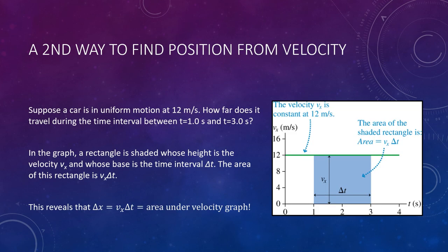Earlier we saw that we could deduce an object's position graph from its velocity graph by drawing a position graph whose slopes everywhere matched the velocity graph. But there's another way to understand the relationship — working backwards from your velocity graph. Suppose there's a car in uniform motion at 12 meters per second. We want to ask: how far does it travel — what is its displacement — during the time interval between 1 and 3 seconds? Mathematically, we use delta x equals vx times delta t, which describes this displacement.